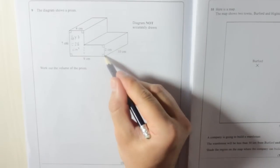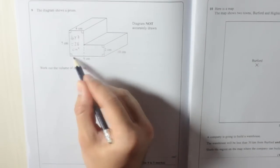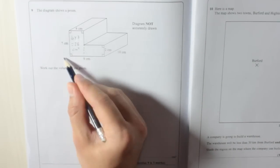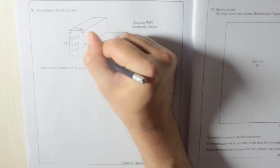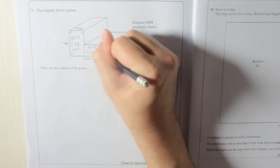This rectangle is 2 and not 9 because all of that's 9. That bit's 4, so take away 4. That means that's 5. 2 times 5, which is 10 cm².